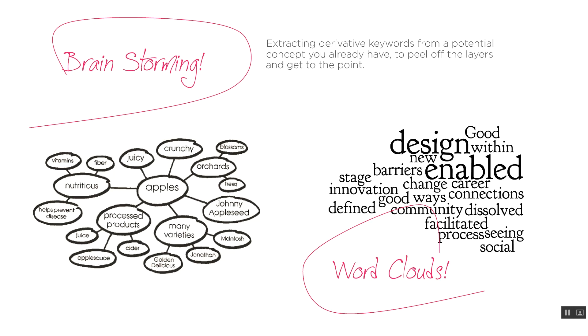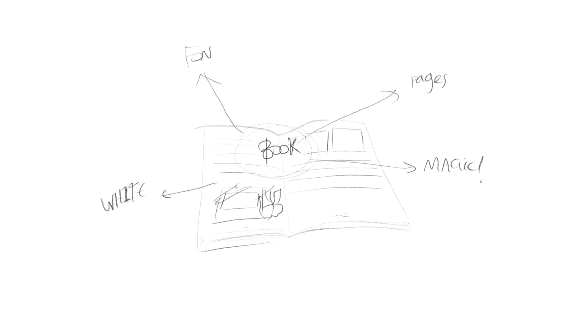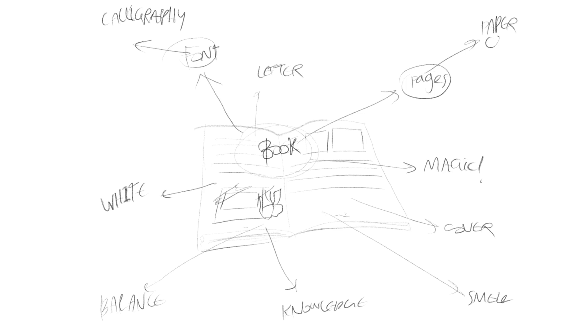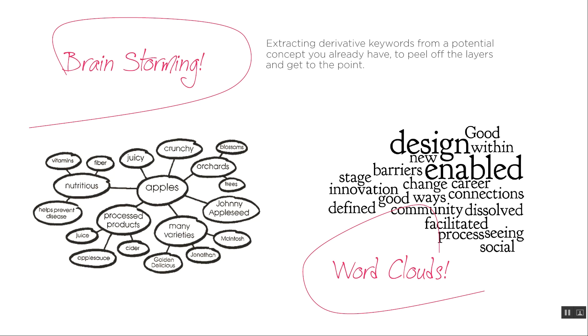You do not have to polish your thoughts for this — actually, the more rough, the better. Let me put the word 'book' in the middle of the page as an example. I can extract the word pages, I can extract magic, I can also say white, font, letter, cover. And I can take one of these words and create my design around it. This is how you gain a concept.